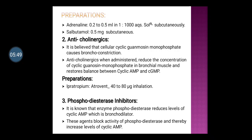Second is anticholinergics. It is believed that cellular cyclic guanosine monophosphate (cGMP) causes bronchoconstriction. Anticholinergic drugs, when administered, reduce the concentration of cyclic GMP in bronchial muscle and restore balance between cyclic AMP and cGMP. Preparation: ipratropium, brand name Atrovent.